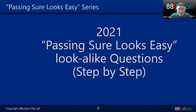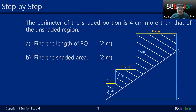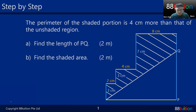Hey everyone, welcome to 'Passing Sure'. This question appears in the PSLE 2021. I call this step by step. The question states: the perimeter of the shaded portion is 4 cm more than that of the unshaded region. Every time I read this, I look at my diagram to understand where the perimeter of the shaded portion is.